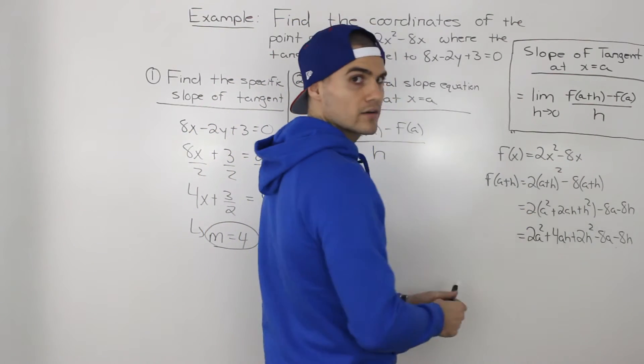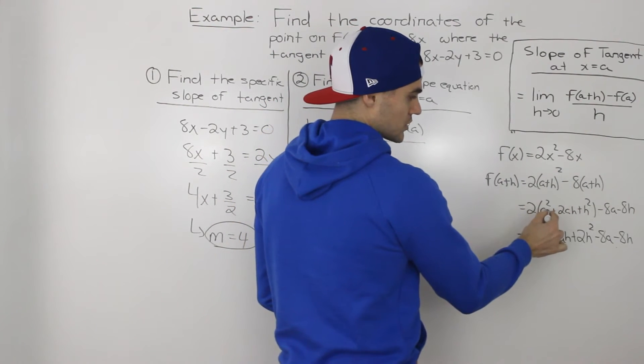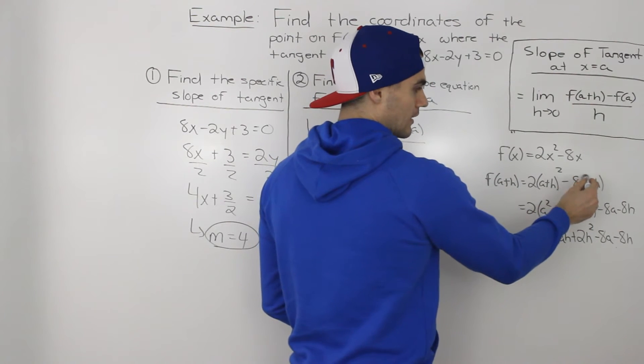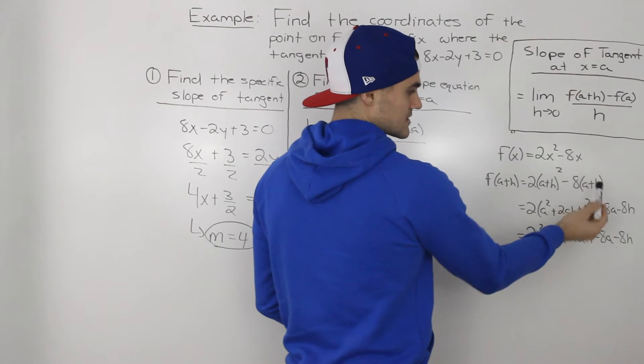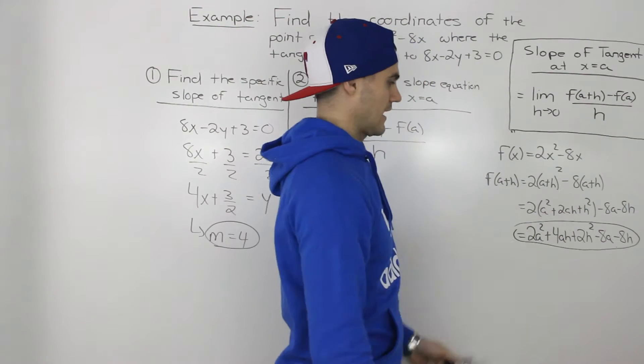Now taking this first part, (a+h)², that's like (a+h) times (a+h), and then you have to FOIL it. So that bracket would turn into a² + 2ah + h². And then distributing that -8 in the second bracket, we'd be left with -8a - 8h.